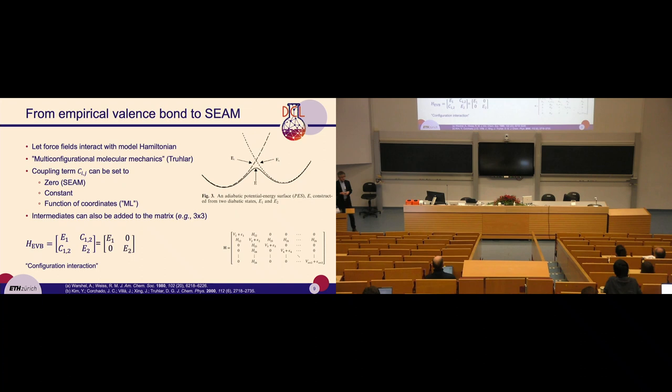We can understand this mathematically in terms of a model Hamiltonian — the empirical valence bond method. On the diagonal we have our force field energies, and on the off-diagonal we have some kind of coupling term. When we work with the SIEM method, we make our lives easy by simply setting this coupling term to zero. So you can wonder if this can be used for something.